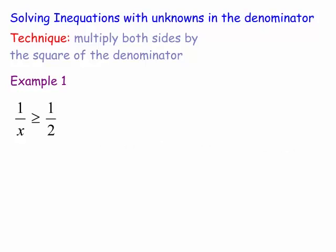Now we do this algebraically as I said by multiplying both sides by x squared. So you multiply both sides by x squared. Let's do that. 1/x times x squared is x. It's greater than or equal to 1/2 of x squared.